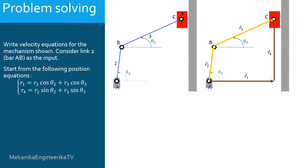In order to get the velocity equations, we are going to differentiate the position equations with respect to time. However, we need first to know which parameter is constant and which parameter is changing with time.